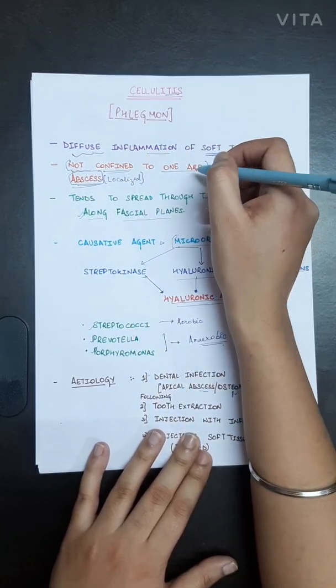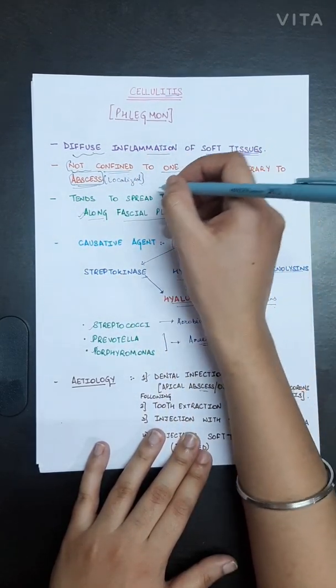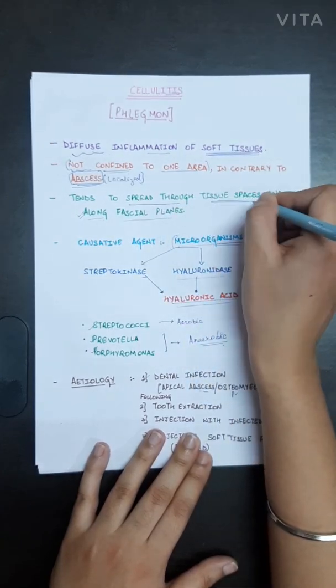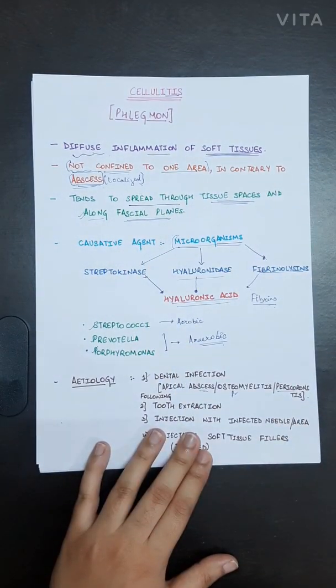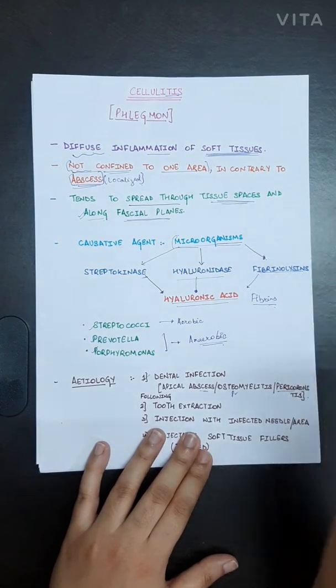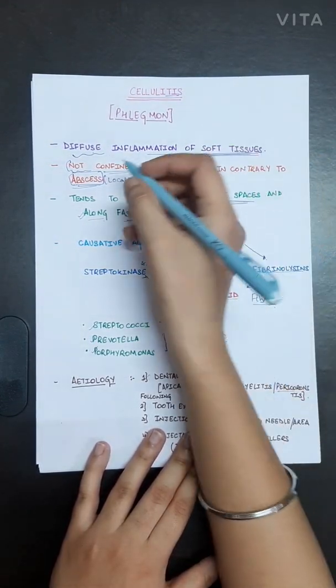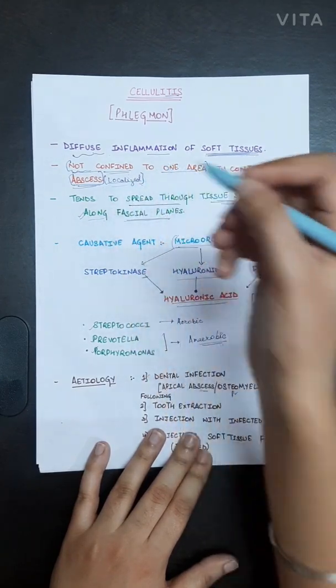Cellulitis is not a localized infection. It tends to spread through tissue spaces and along the fascial planes. This is an important fact about cellulitis - it is different from abscess because abscess is localized, but cellulitis tends to spread through tissue spaces.